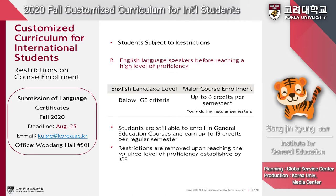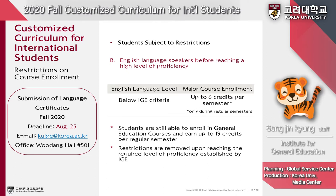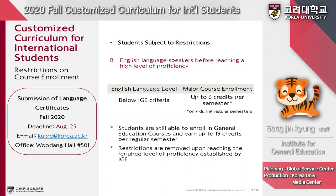Students exempted from the intensive Korean language program may still be subject to restrictions on major course enrollment and may be restricted to a maximum of 6 credits per semester if they do not fulfill the language proficiency criteria set by the Institute for General Education. To have restrictions removed, students must submit an official language certificate demonstrating the required proficiency level. Students are informed via email before the semester about the exact level needed. If you have additional English proficiency certificates, please submit them by August 25th by email or visiting our office, or restrictions will remain in place.